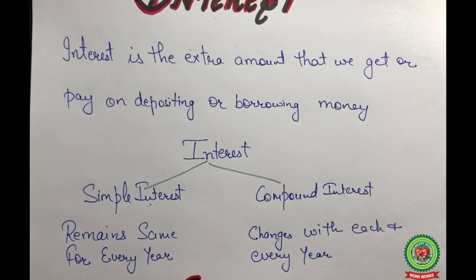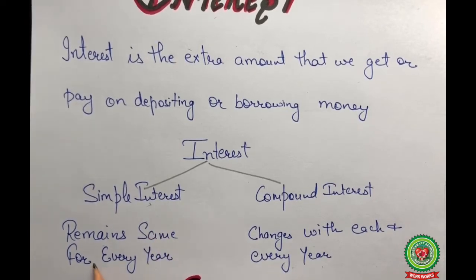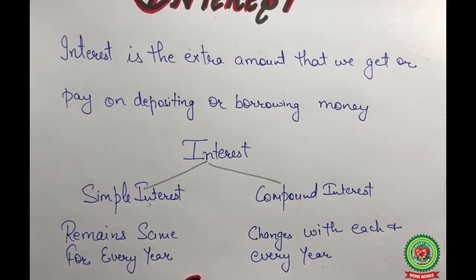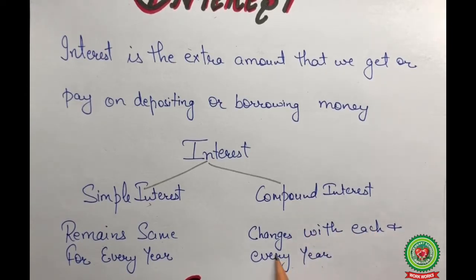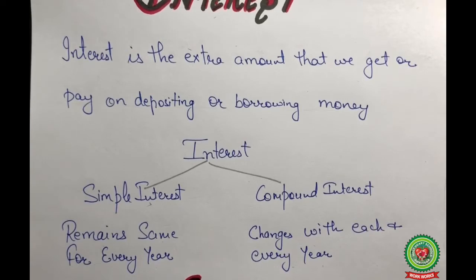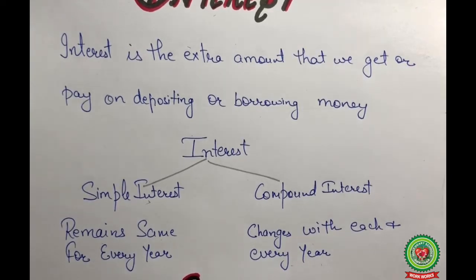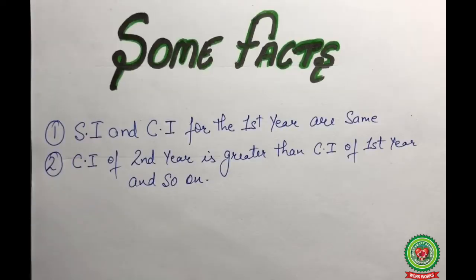Compound interest is interest on both the principal and the compounding interest paid on that loan. Simply put, simple interest remains the same for every year, whereas compound interest changes with each and every year. That is why we call compound interest as interest on interest.